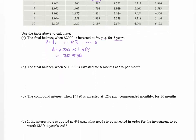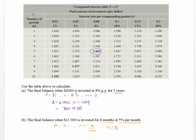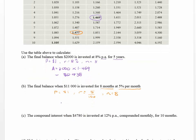The next question: find the final balance when eleven thousand dollars is invested for eight months at five percent per month. The rate is given in months and n is eight months, so both are in months — no conversion needed. From the table, five percent for eight months gives 1.477. So 11,000 × 1.477 gives us sixteen thousand two hundred and forty-seven dollars.